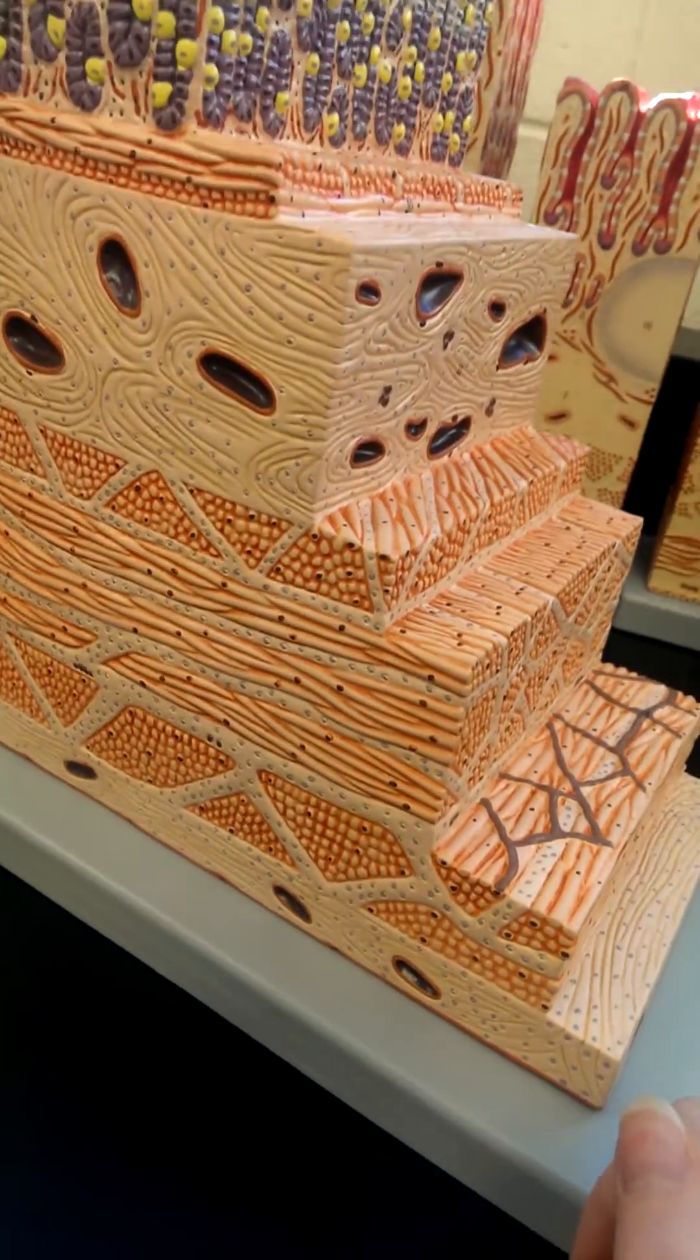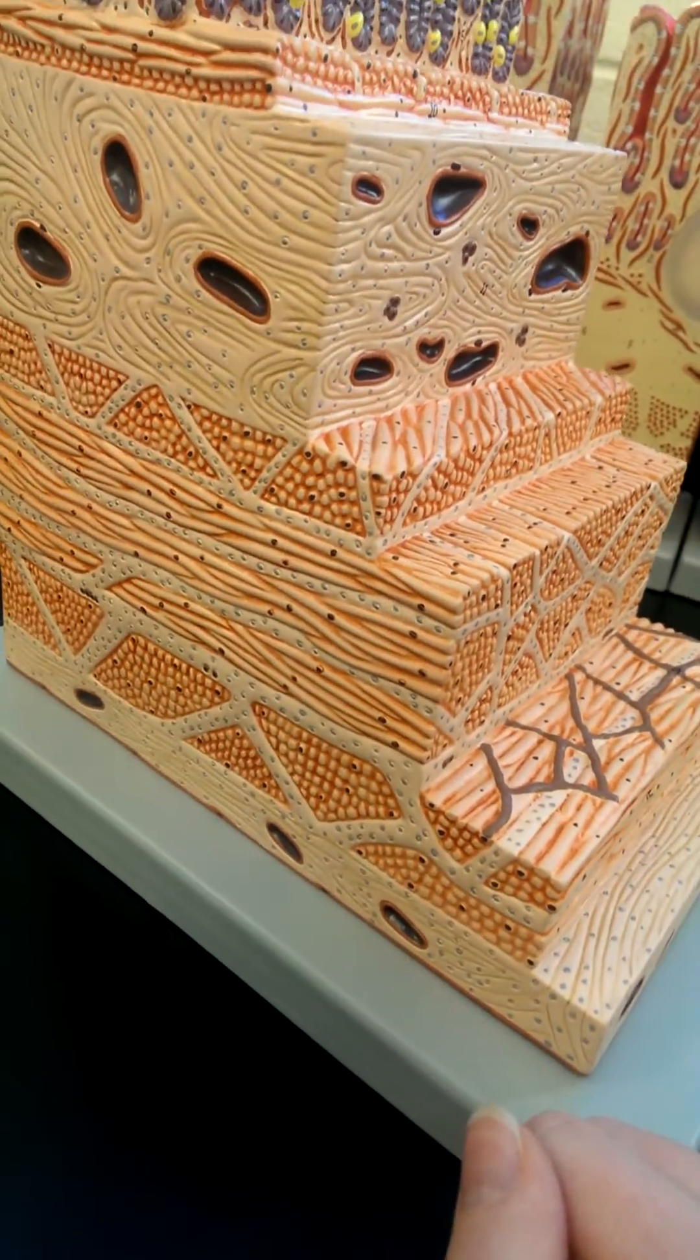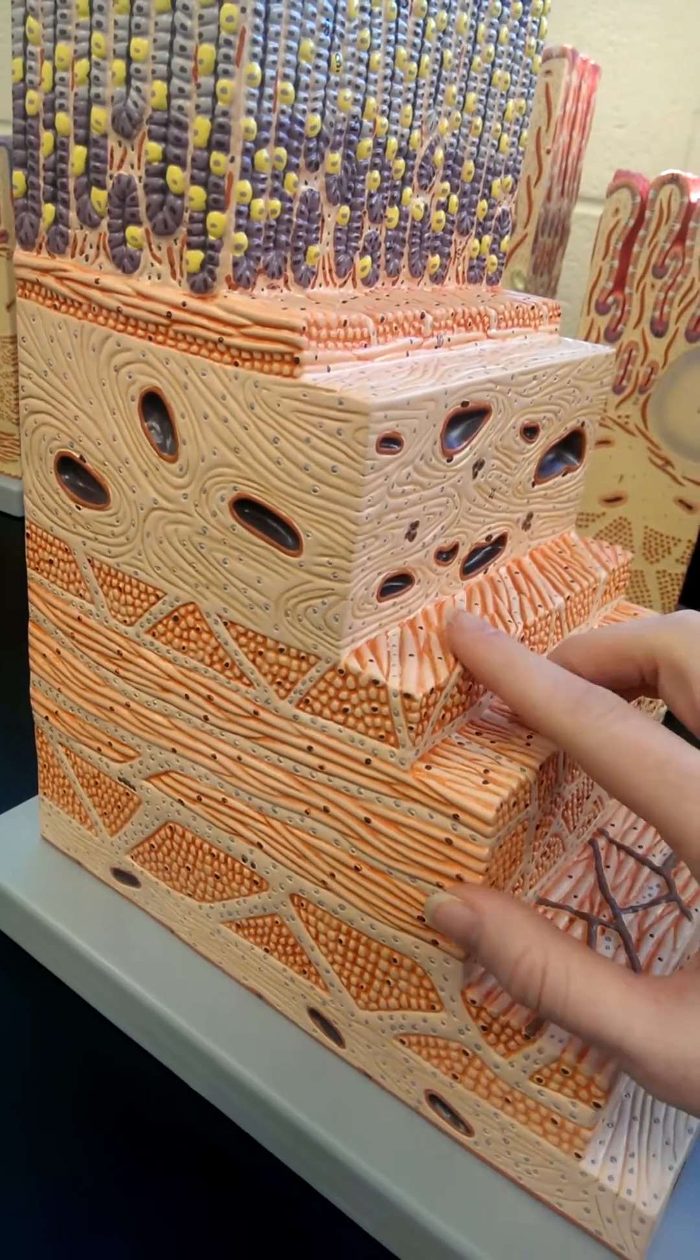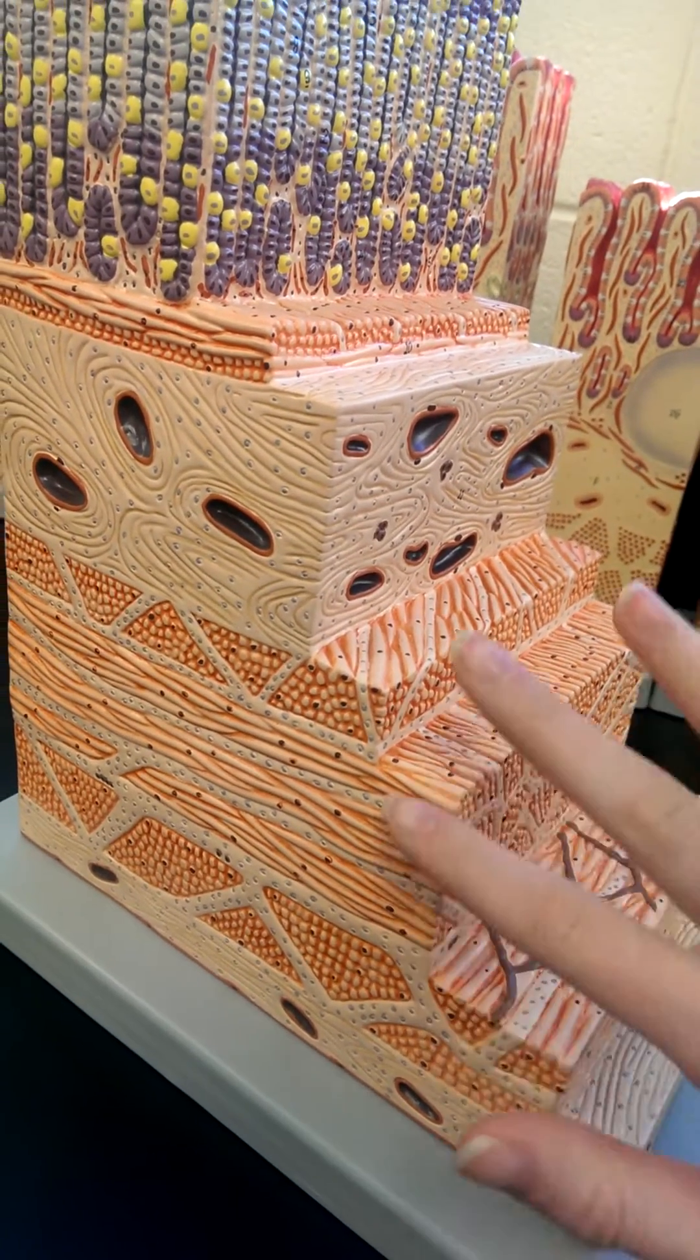Then we get our muscular layers, and in the stomach there are three muscular layers. You've got a longitudinal and a circular and an oblique layer throughout here.